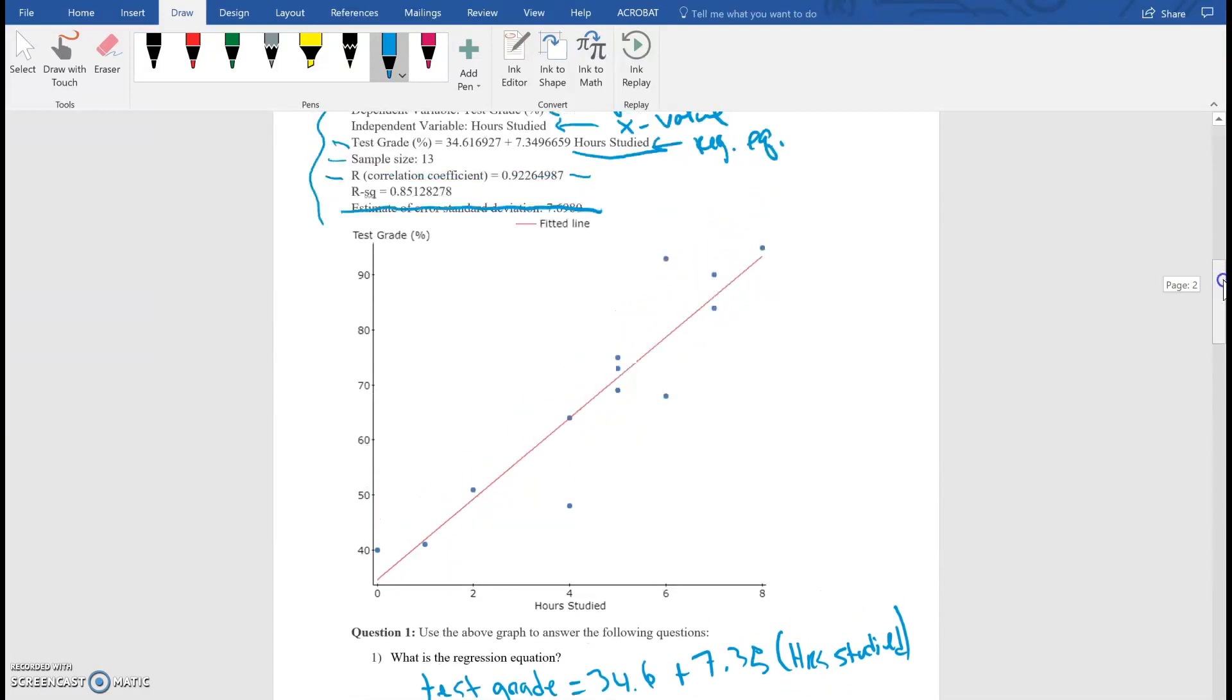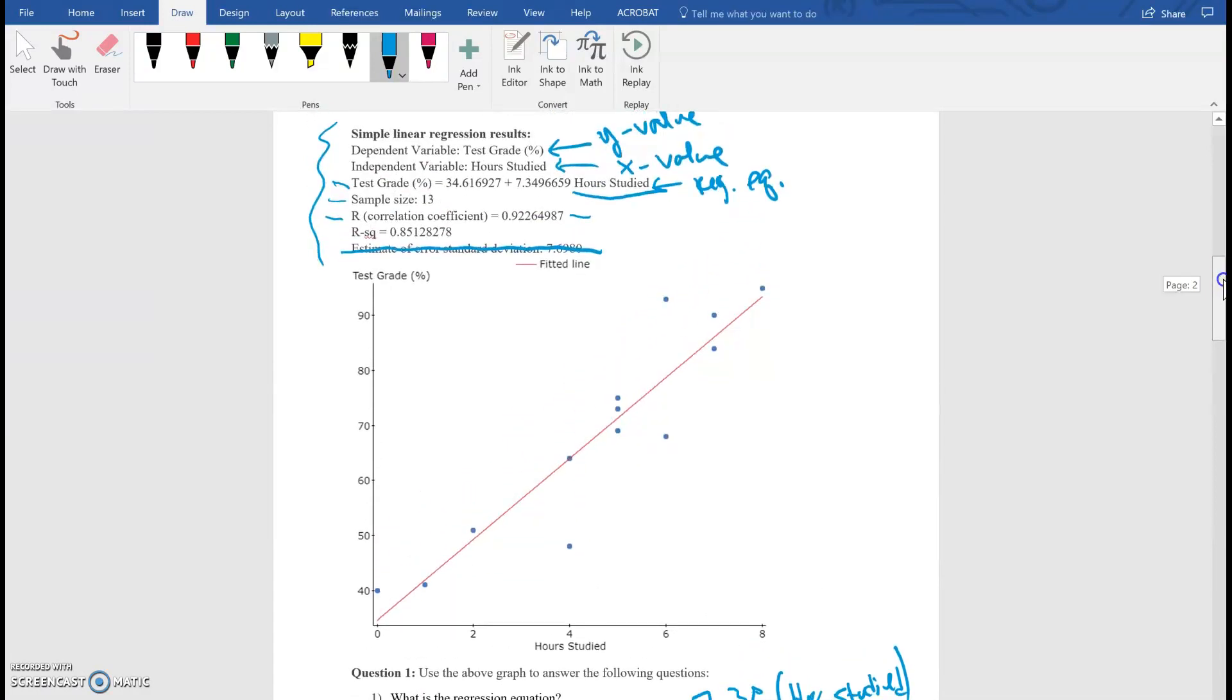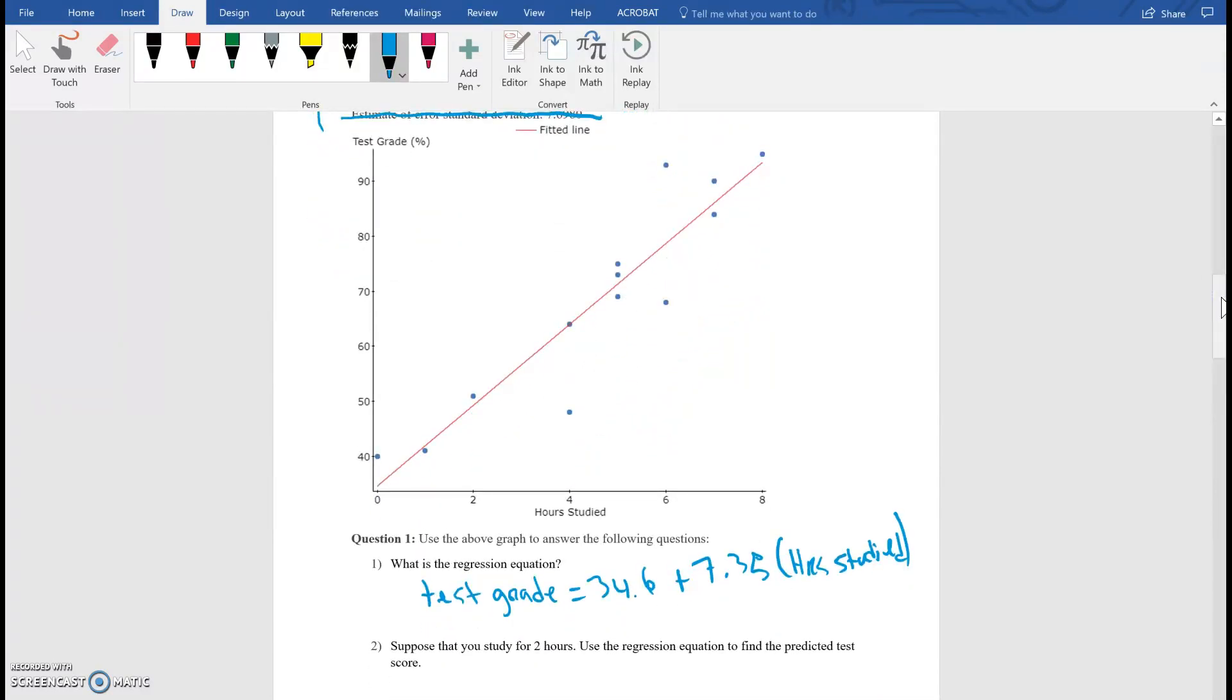You don't need to write all of these down. I'll go ahead and tell you how many decimal places to go by, but make sure that you have all of this. You can also write Y hat equals 34.6 plus 7.35x if you want. And then x in this case, you have to know that this is hours studied. And then y in this case will be test grade. So you can write either of these will be okay.